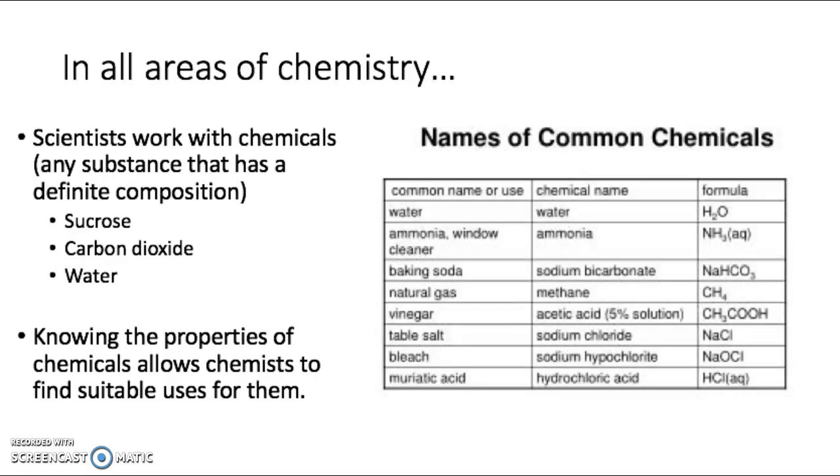In all areas of chemistry, scientists work with chemicals. A chemical is any substance that has a definite composition. Some examples of chemicals are sucrose or table sugar, carbon dioxide, and water. Knowing the properties of chemicals allows chemists to find suitable uses for them.